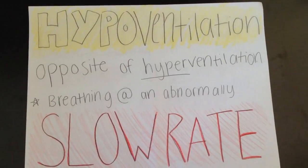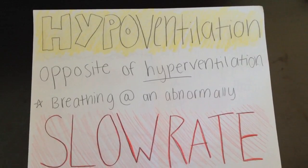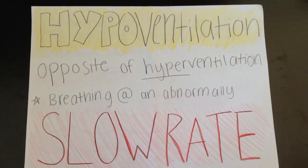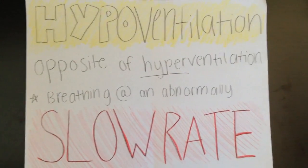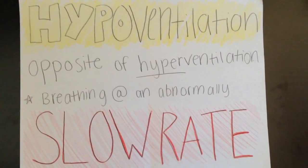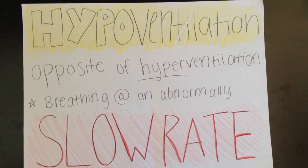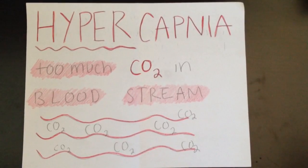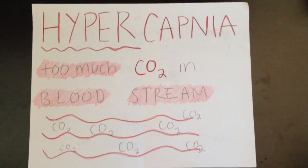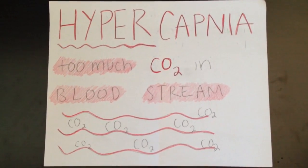The opposite of hyperventilation is hypoventilation. Hypoventilation is breathing at an abnormally slow rate, which results in an increased amount of carbon dioxide in the blood. In this process, blood oxygen and pH fall significantly. Hypoventilation leads to hypercapnia, which is excessive carbon dioxide in the bloodstream, typically caused by insufficient respiration.